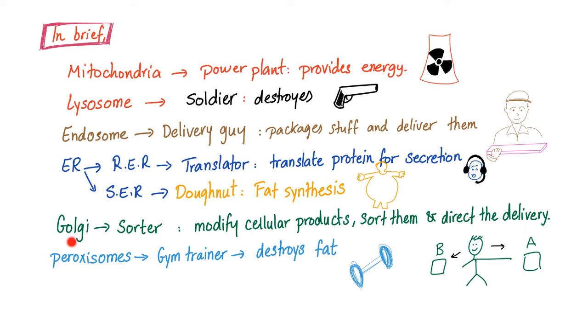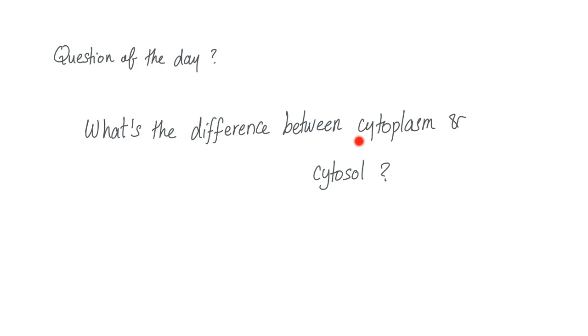The smooth endoplasmic reticulum is the donut - fat synthesis is its job. Golgi apparatus is the sorter - it modifies cellular products, sorts them, and directs the delivery. Peroxisome is your personal gym trainer - destroys the fat. Question of the day: what's the difference between cytoplasm and cytosol?